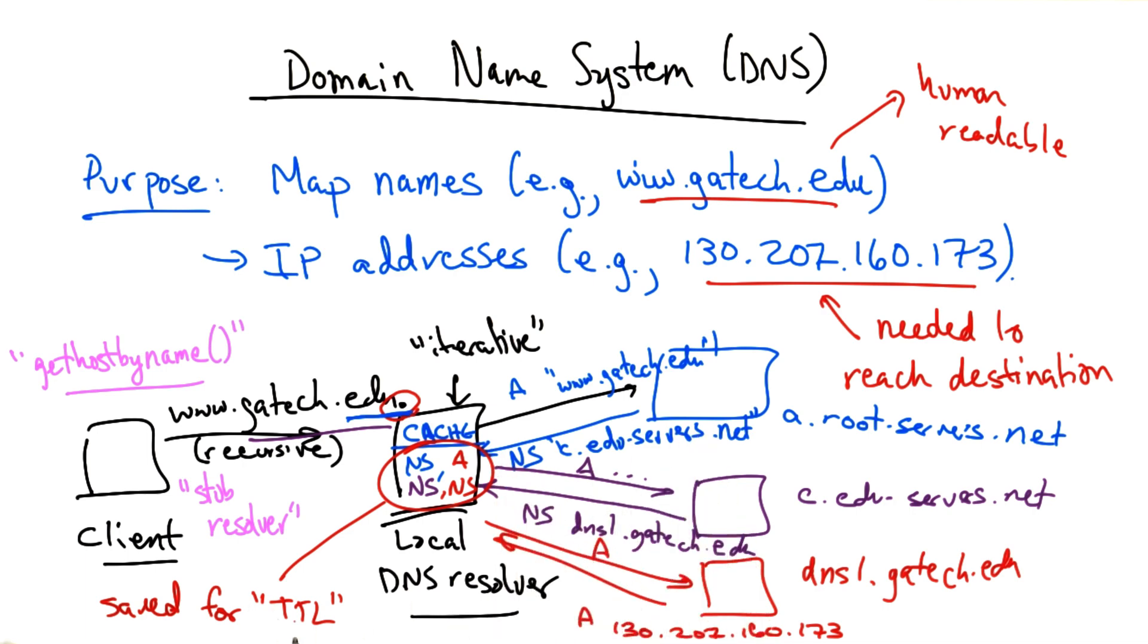Each one of these replies has what's called a time to live, or a TTL, that indicates how long each of these answers can be saved before they need to be looked up again. Caching allows for quick responses from the local DNS resolver, especially for repeated mappings.